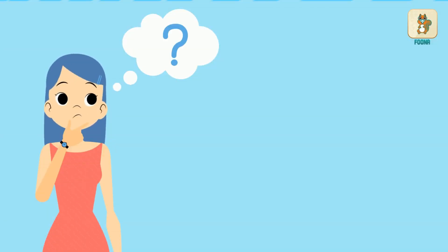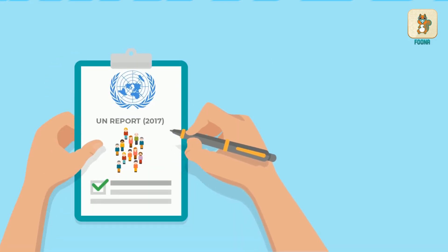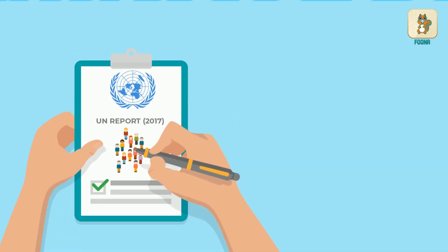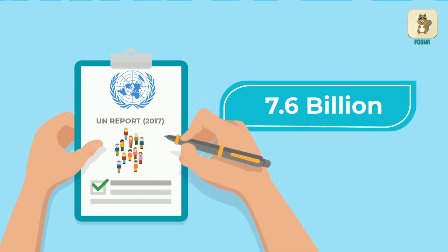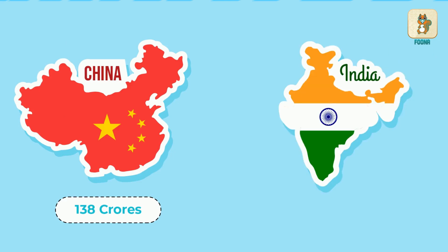Do you know what the current population of the world is? According to the UN report, the world population is 7.6 billion. China at 138 crores and India with 133 crore people are the most populated countries in the world.